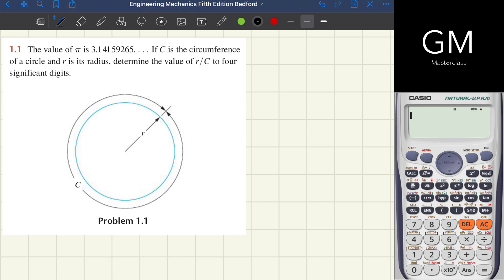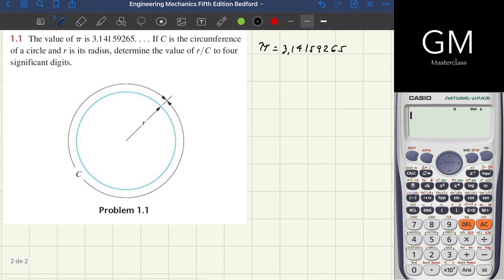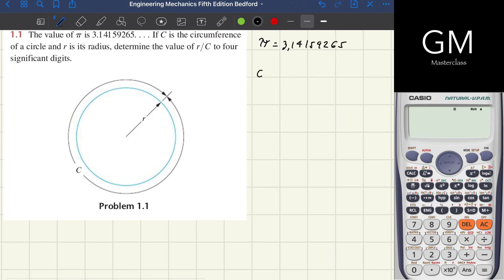We're going to write down the information the problem gave us. First, π, as we all know, is equal to 3.14159265.